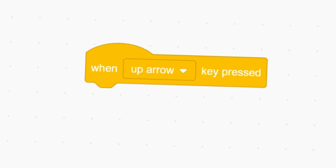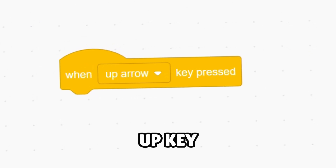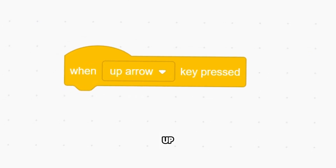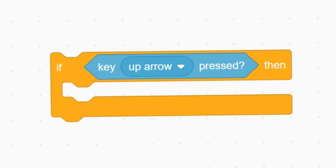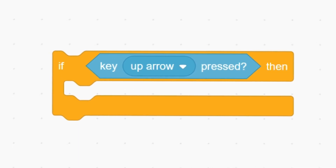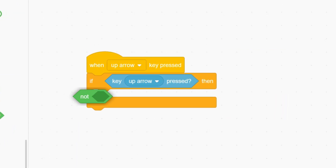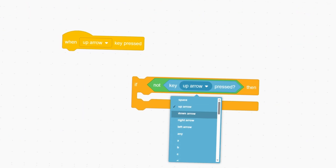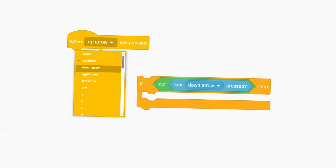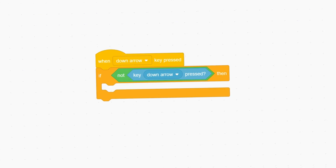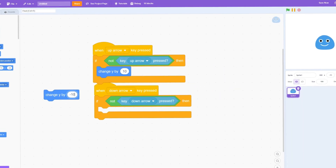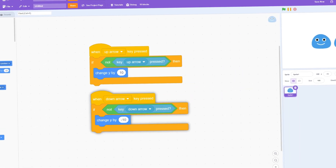This block triggers not only when you press the up key, but also when you scroll the mouse up. The other block only triggers when the up arrow key is pressed, meaning we can isolate the scroll wheel on the mouse. The same can be done for the downward motion on the mouse using 'when down arrow key pressed.' And if we combine these with some movement code, we can Bob Bob the Blob.